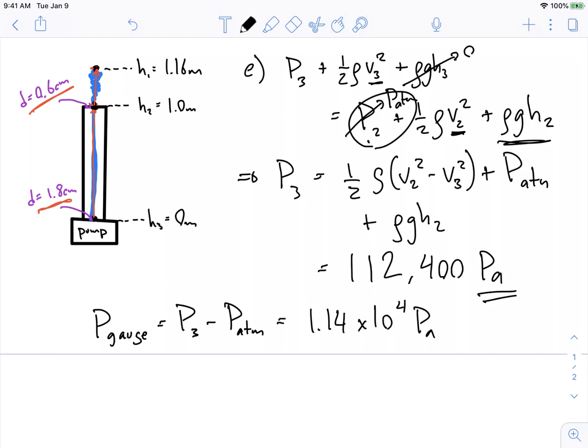So this is the pressure above atmospheric pressure that has to be supplied to the fluid to shoot it all the way up the fountain and to make it come out so you can drink it.